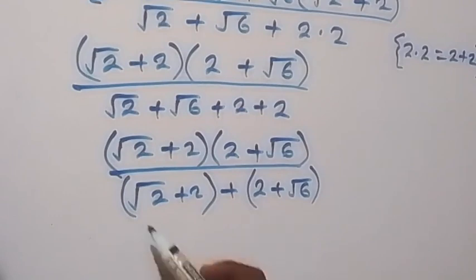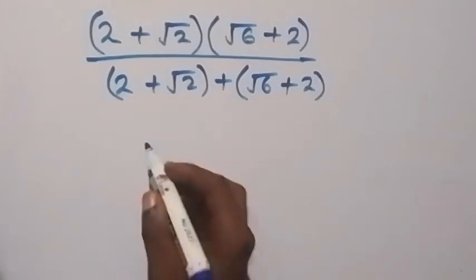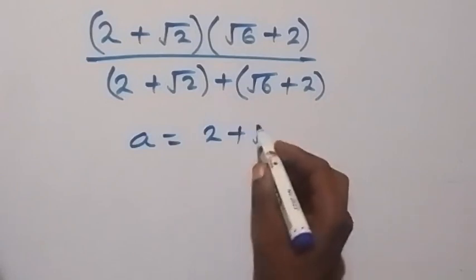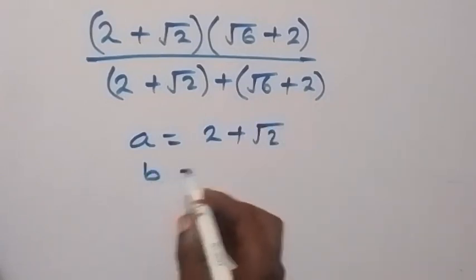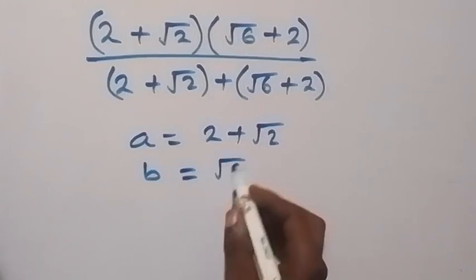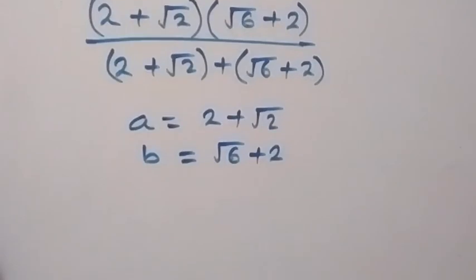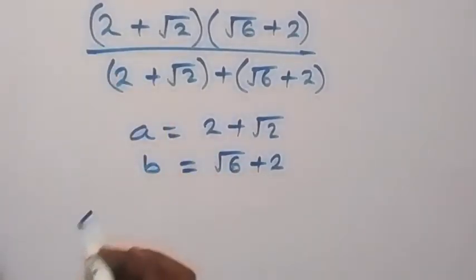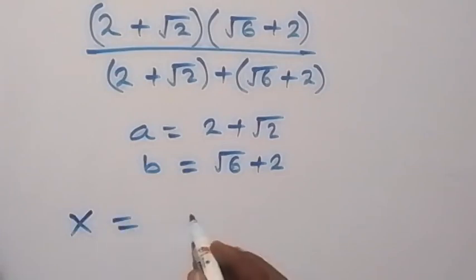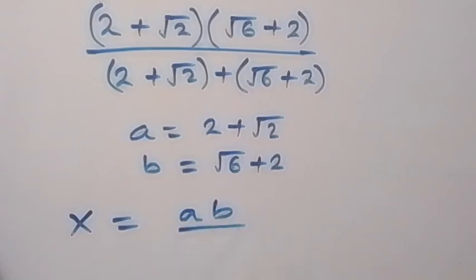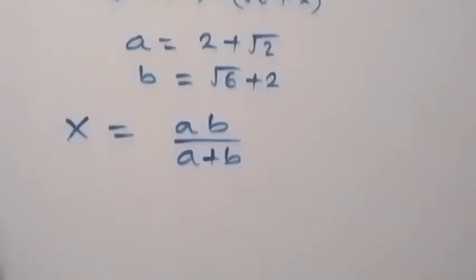From here we can let a letter represent root 2 plus 2. So let a = 2 plus root 2 and b = root 6 plus 2. Then if we let x be what we have here, we can say x equals ab over (a plus b).